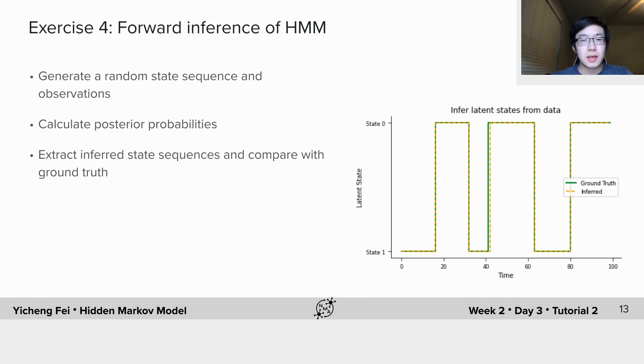You can see here, the inference is making an error at around time 41. Please try different switching probabilities and noise levels and see how inference accuracy changes with them. Have fun!